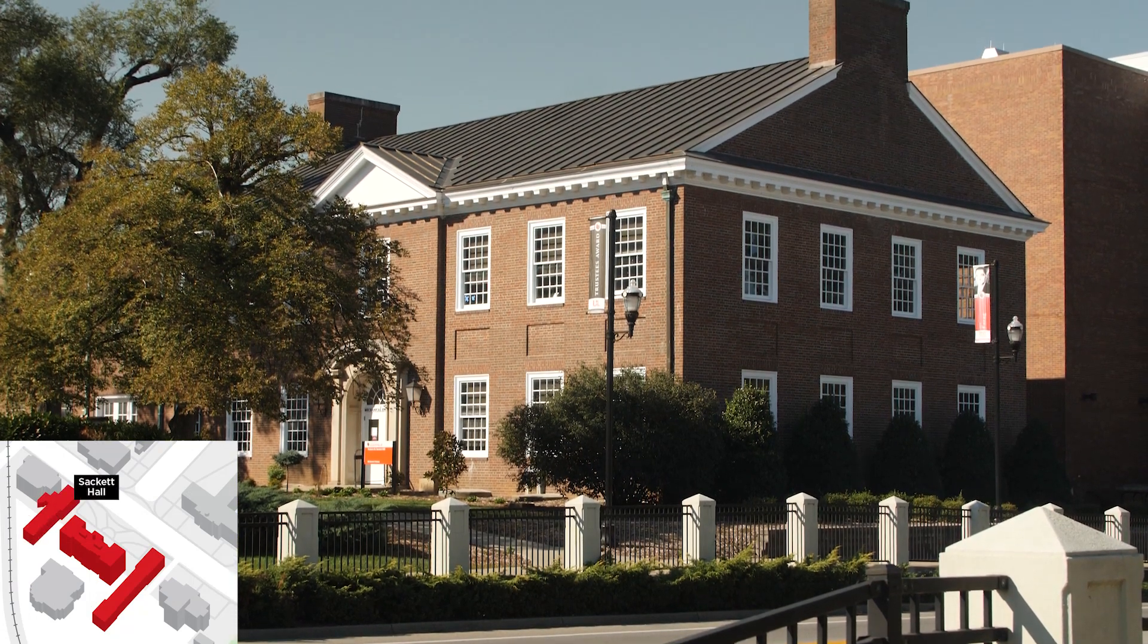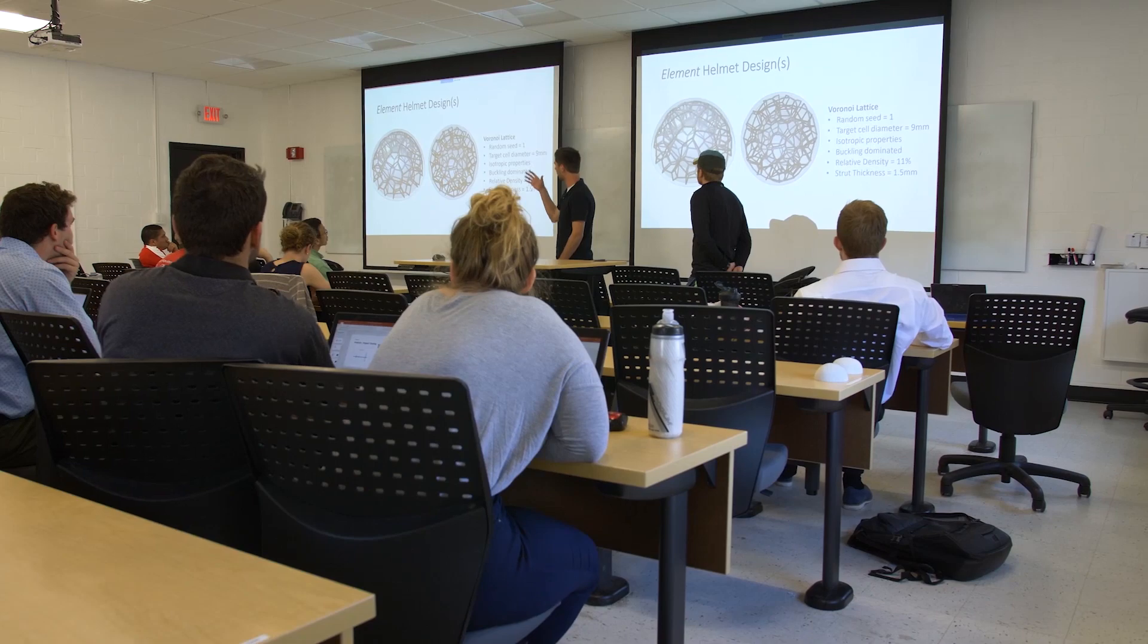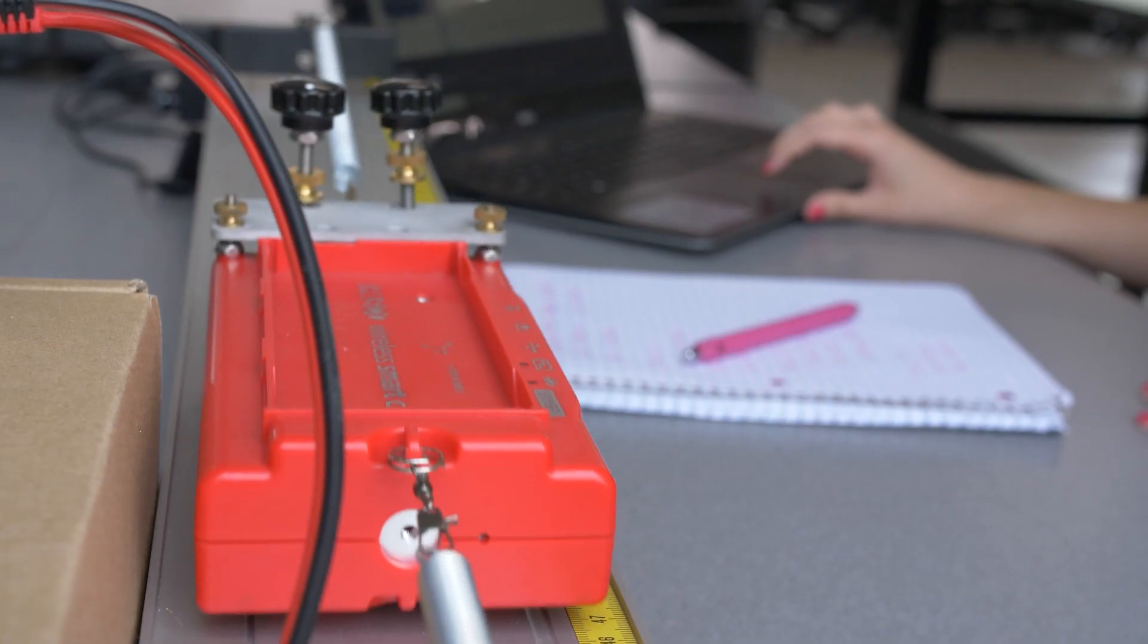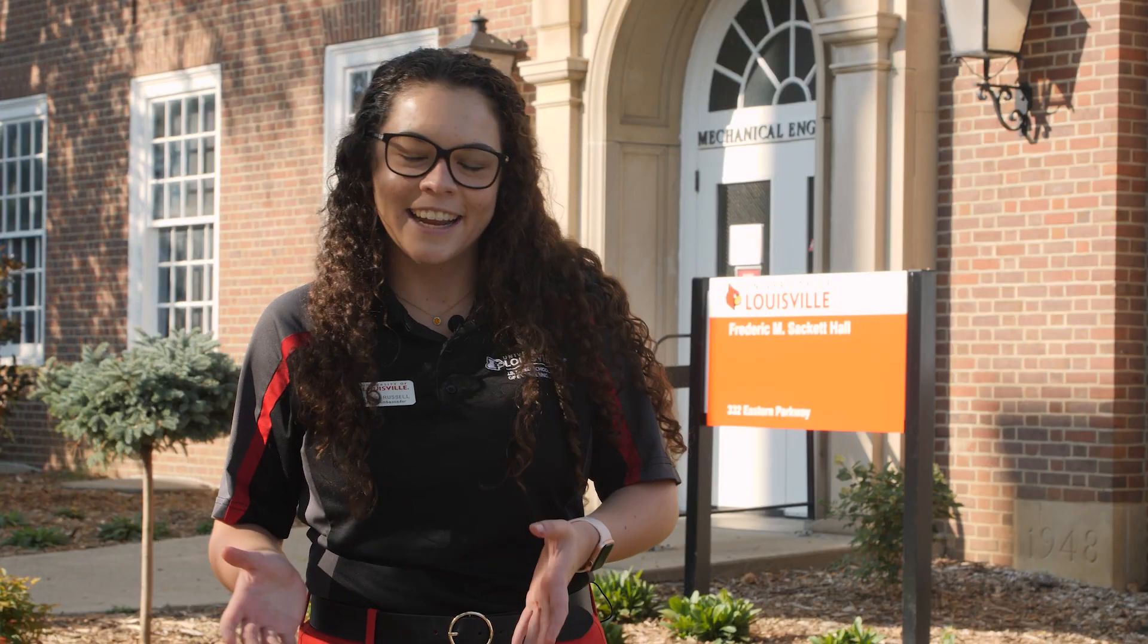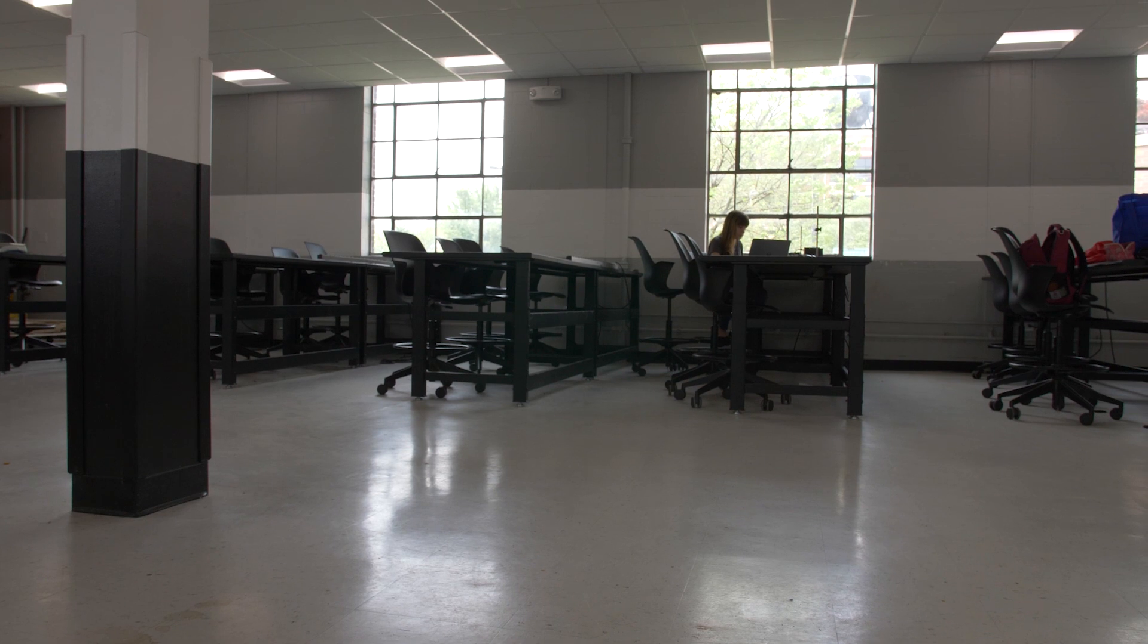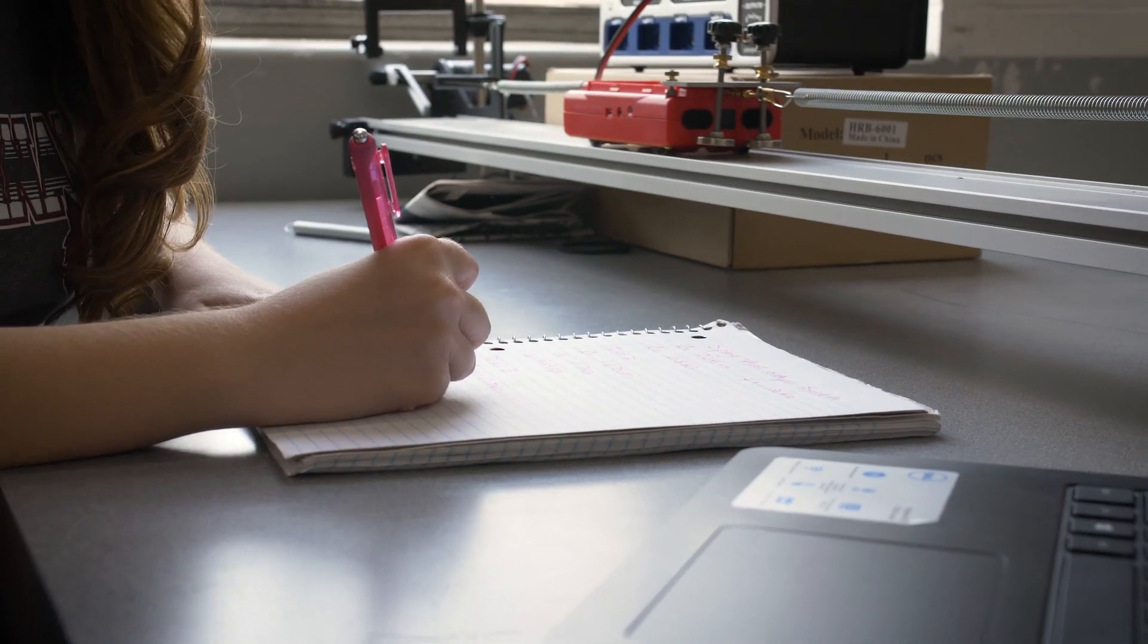This is Sackett Hall. If you're thinking about being a mechanical engineer, this is probably where you'll spend most of your time. A lot of your classrooms will be housed on the first and second floor, as well as your labs. Sackett has one large concrete lab room. It has to be concrete, so we can't break anything. This is also used as a study hall outside of class hours, so when there isn't a lab in there, you can go in there and work on your different projects.